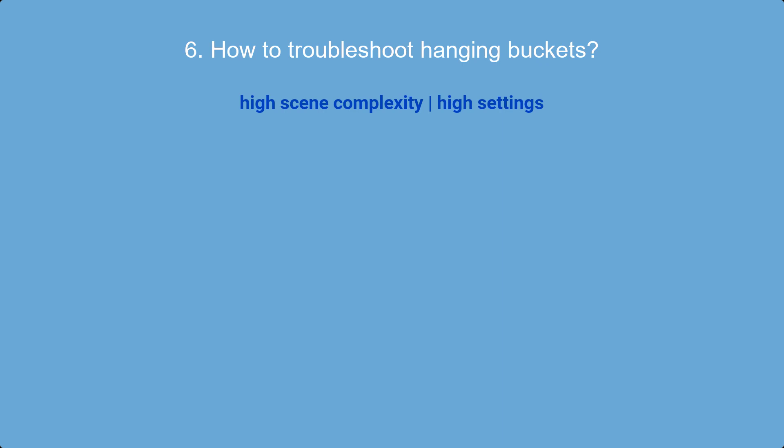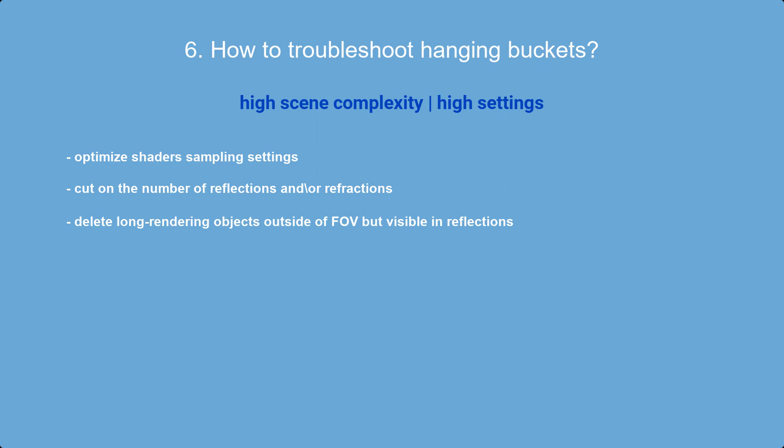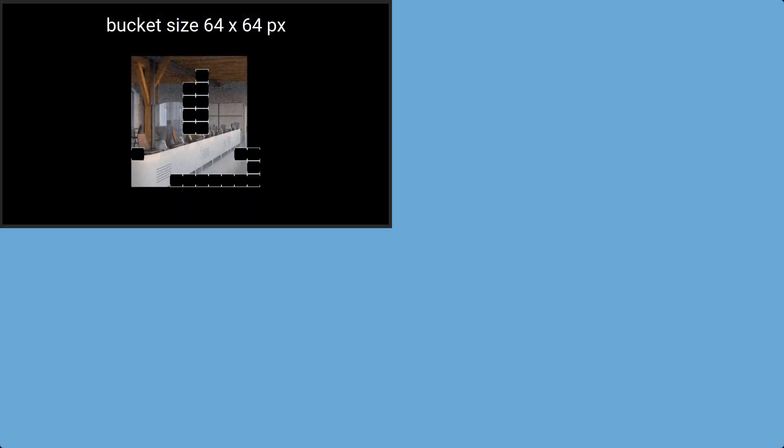For hanging buckets caused by scene quality settings, the buckets will eventually finish but after a long time. The usual actions are optimizing sampling settings of shaders, cutting the number of reflections and refractions, or deleting objects outside the field of view that are being reflected in objects inside it. If you don't want to optimize scene settings, the simplest solution is to set a smaller bucket size — more buckets will then tackle the problematic area simultaneously.